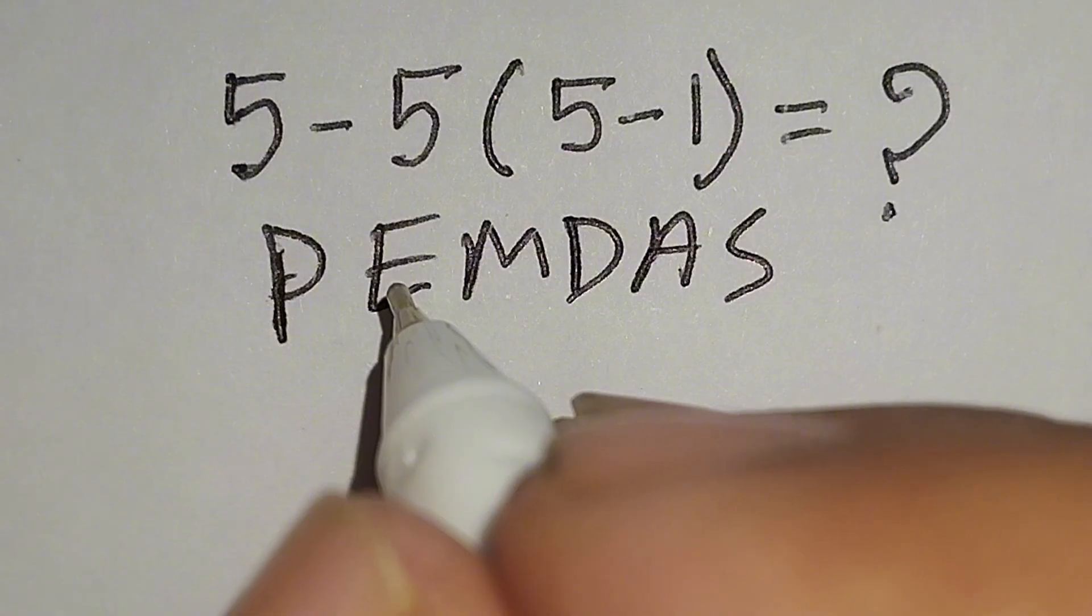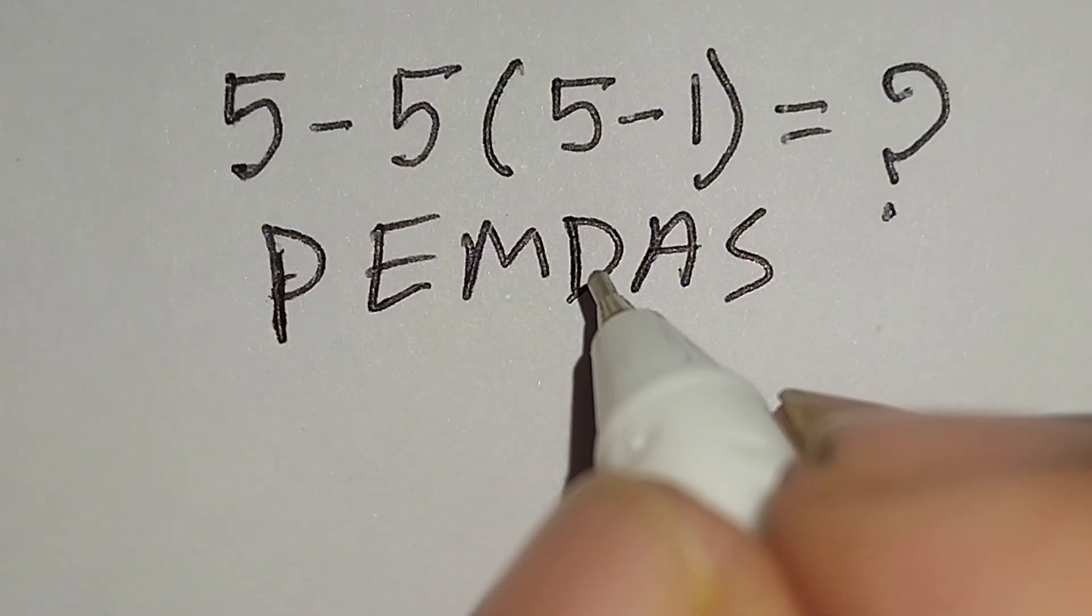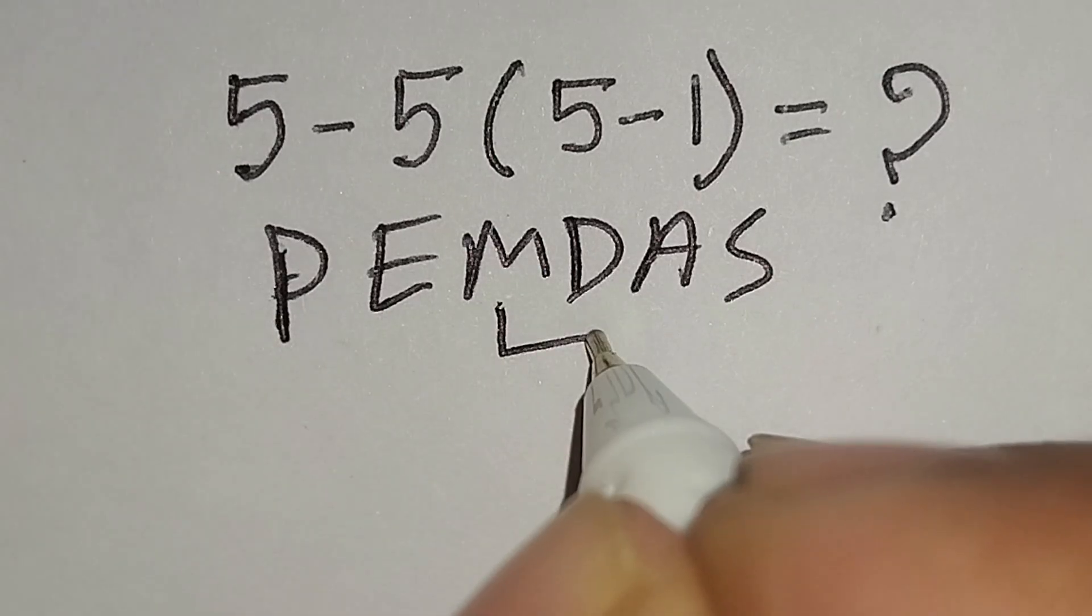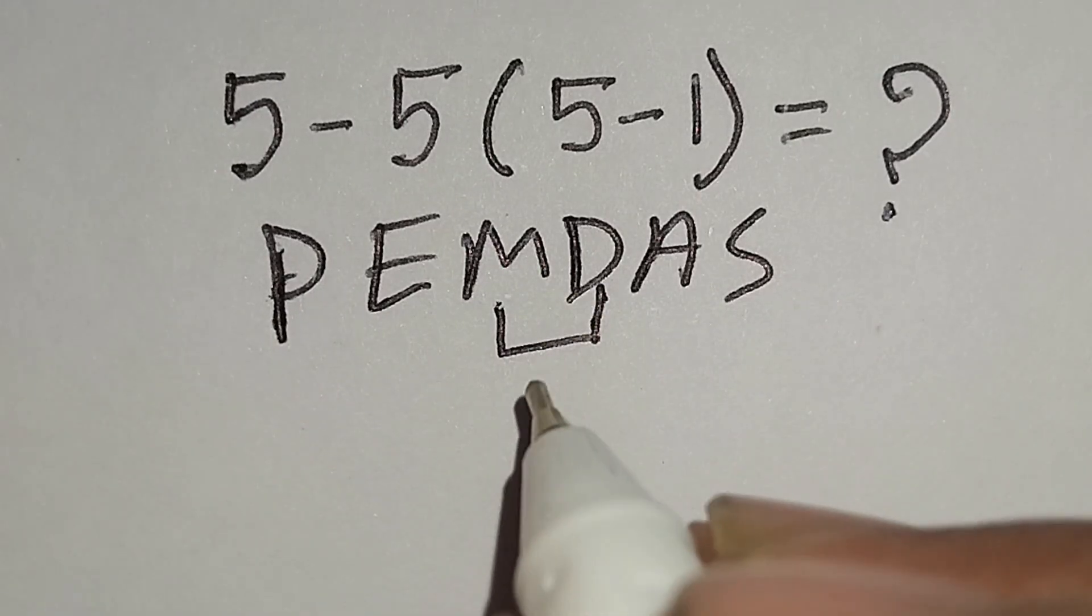According to PEMDAS rule, at first we have to work with parenthesis, then exponent, then multiplication or division, then addition or subtraction.